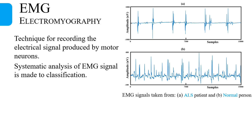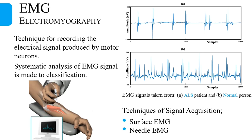Electromyography, or EMG, is a technique for recording electrical signals produced by motor neurons in muscles. There are two techniques used to record EMG signals. The first is surface EMG, in which surface electrodes are used to record a limited amount of electrical activity from the surface above the muscle. The second is needle EMG, in which a fine needle is inserted into the muscle to record a more complex EMG signal.